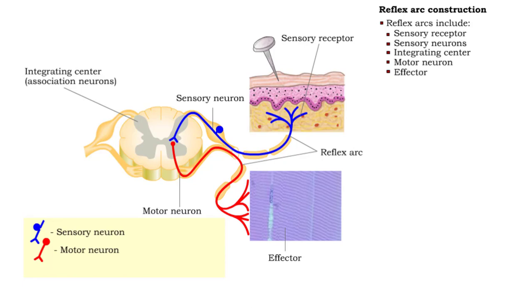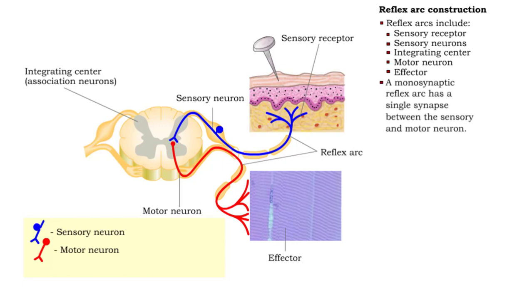Other characteristics, or combination of characteristics, differentiate types of reflex arcs from one another. The simplest of reflex arcs have a single synapse between the sensory neuron and motor neuron. These reflex arcs are referred to as monosynaptic.